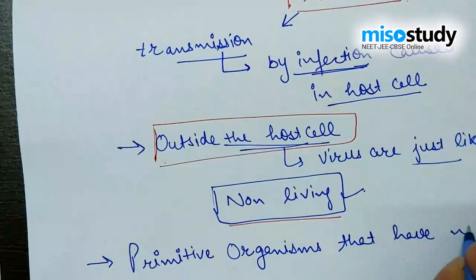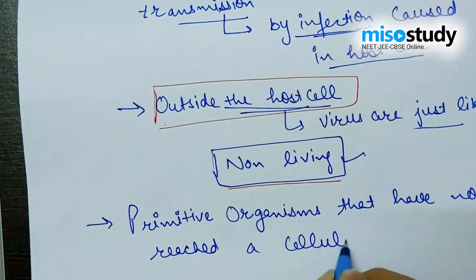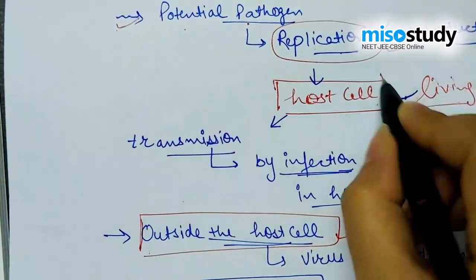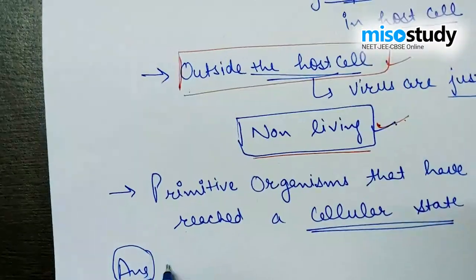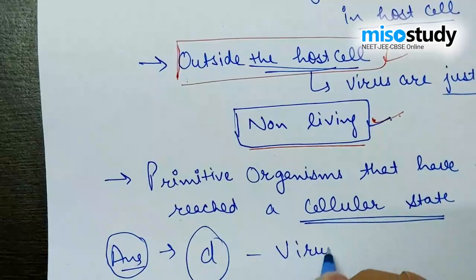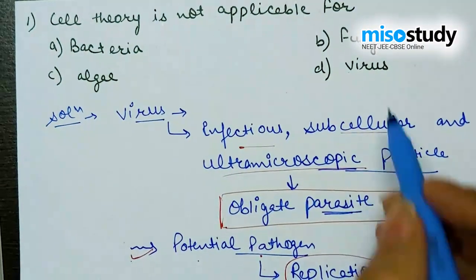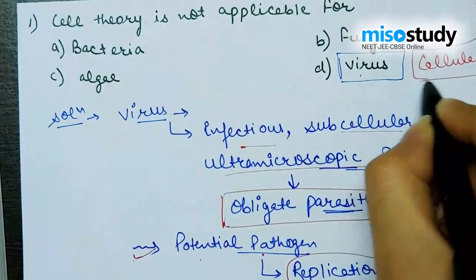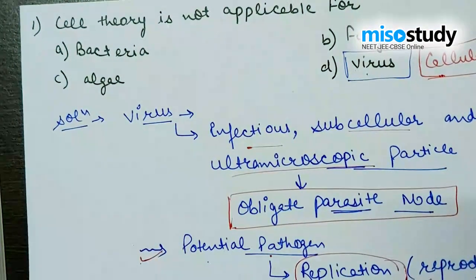Viruses have not reached a cellular state. They act as non-living when outside the host and as living when inside the host cell. So according to the discussion, the right answer for the question is option D — that is virus. Cell theory is not applicable for virus because virus is a primitive organism that has not reached up to the cellular level and exhibits both non-living and living modes. Let's move on and discuss the next question.